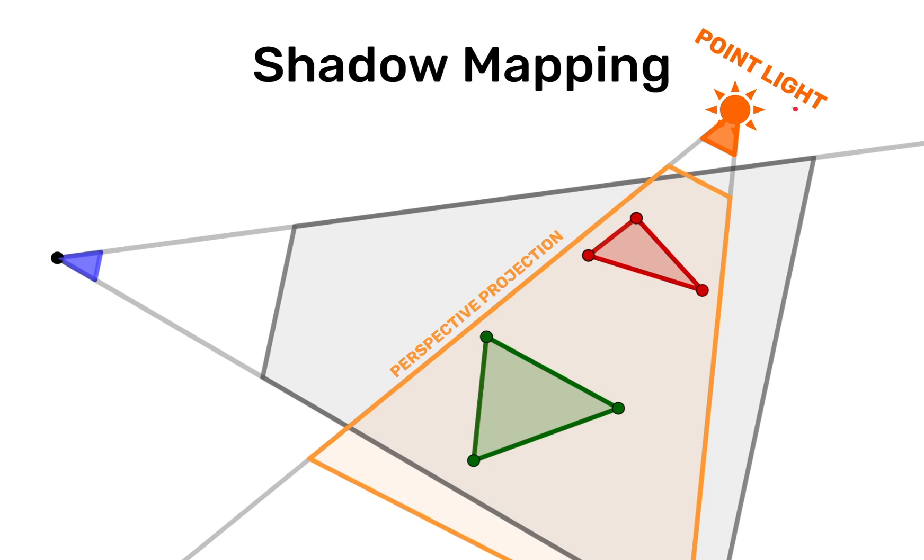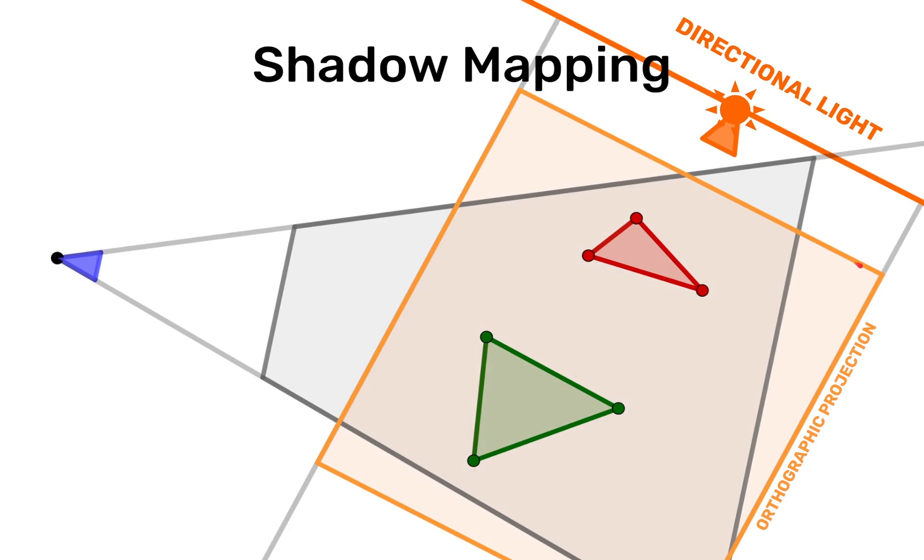So the example we had was with a point light. So we have this perspective projection that is capturing the shadow map. With a directional light source you would have an orthographic projection that captures the shadow map.